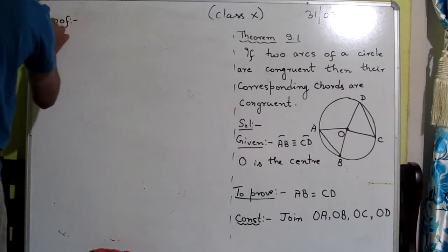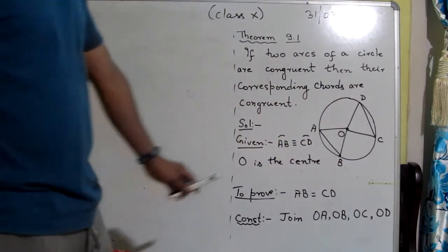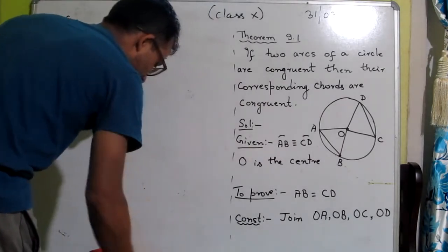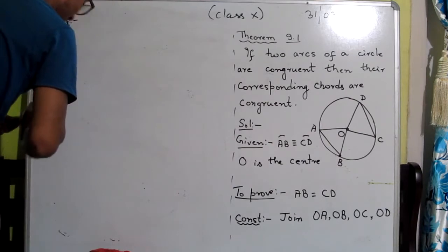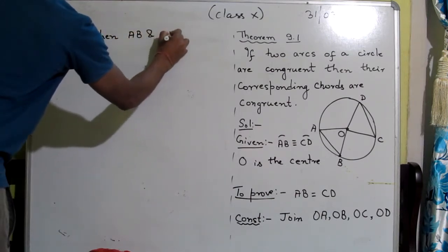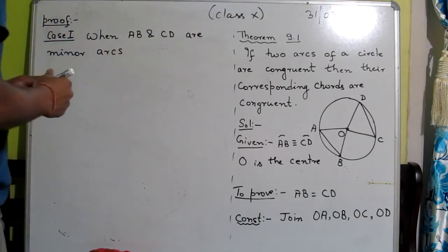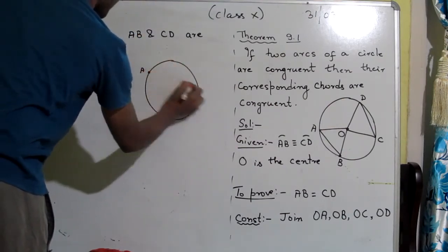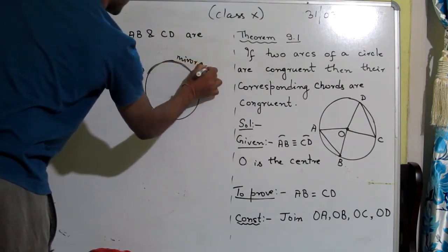Now the proof is set up. We proceed with Case 1: when AB and CD are minor arcs. This is the first and important case.